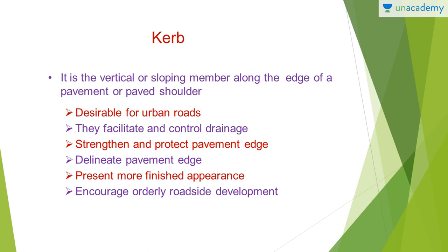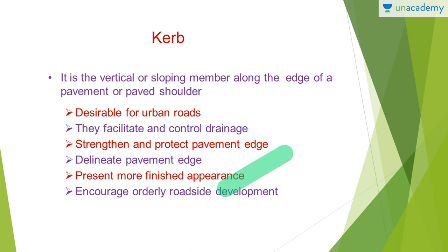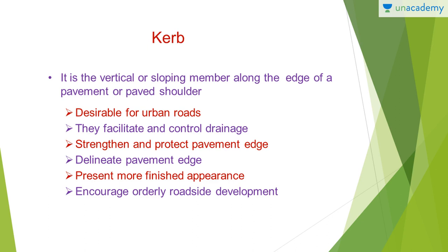Next are the kerbs. A kerb is a vertical or sloping member along the edge of a pavement or paved shoulder. They are desirable for urban roads and they facilitate and control drainage, strengthen and protect the pavement edge, delineate the pavement edge, present a more finished appearance, and encourage orderly roadside development. There are various types of kerbs: barrier kerb, semi-barrier kerb, and mountable kerb — all present at the ends or edge of the pavement.